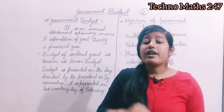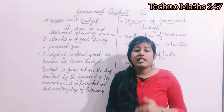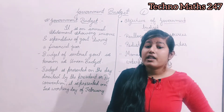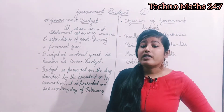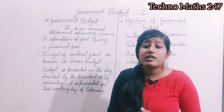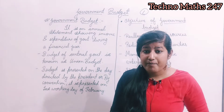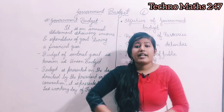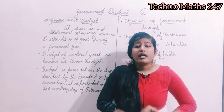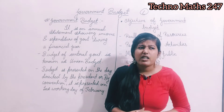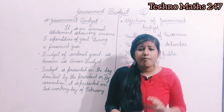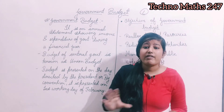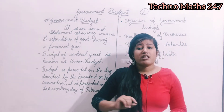यानि कि government का जो annual income and expenditure होता है, उसका एक estimate बना के रखा जाता है। जैसे suppose month की starting में मेरे पास 20,000 रुपीज है, अब मैं ये decide करती हूँ कि इस 20,000 से मुझे अपना पूरा month करना है। तो मुझे क्या-क्या खरीदूँगी, क्या-क्या नहीं खरीदूँगी, कहाँ invest करूँगी। वैसे ही government की पूरी annual जो budget होती है, annual expenditure और income होती है, उसको पहले से ही estimate बना दिया जाता है।